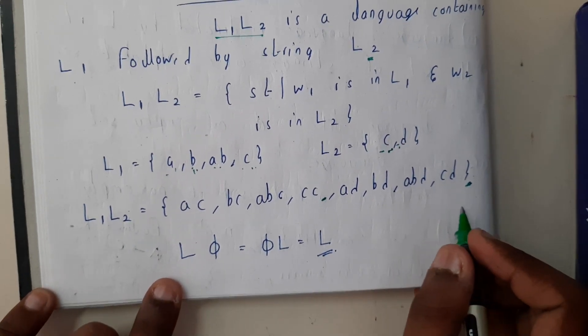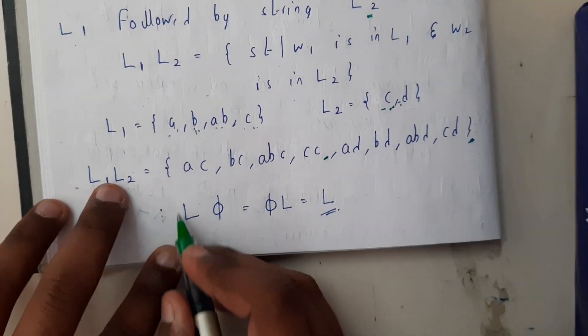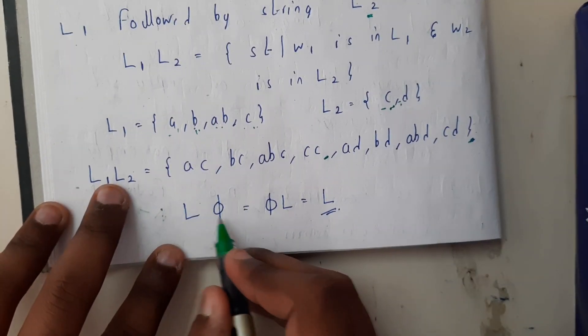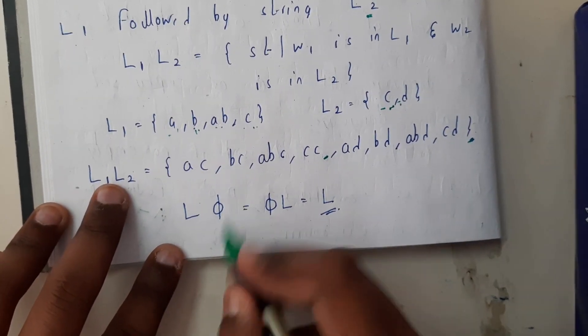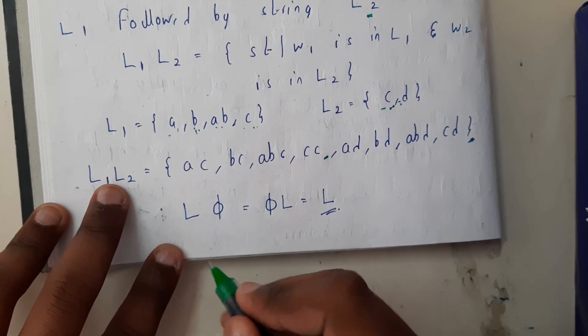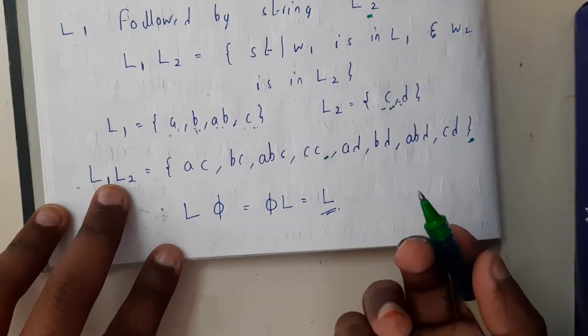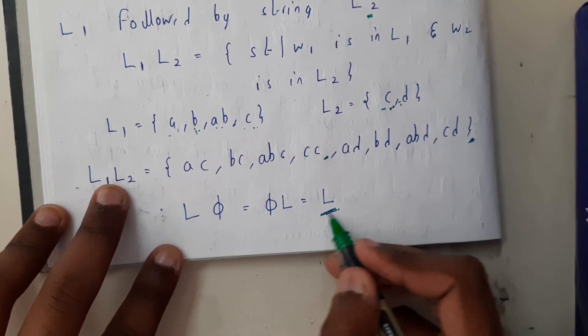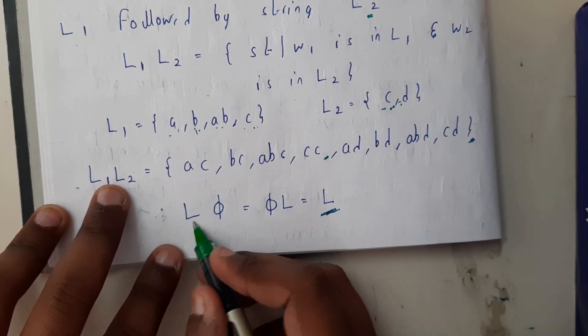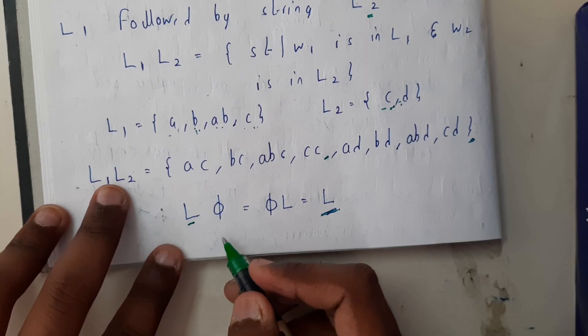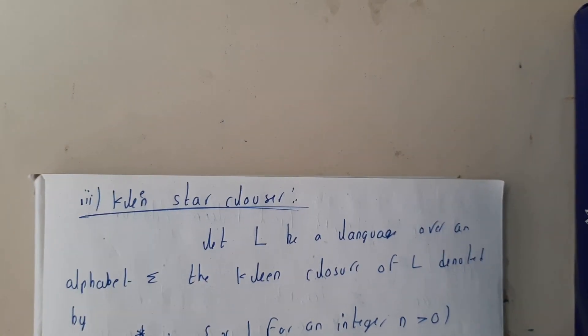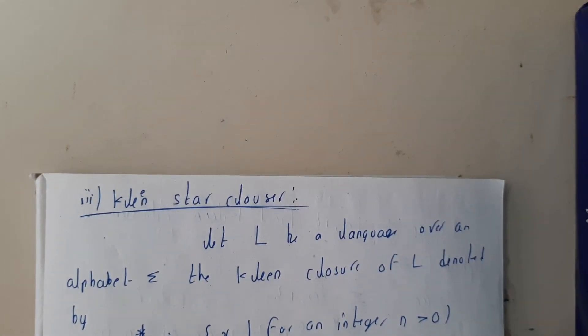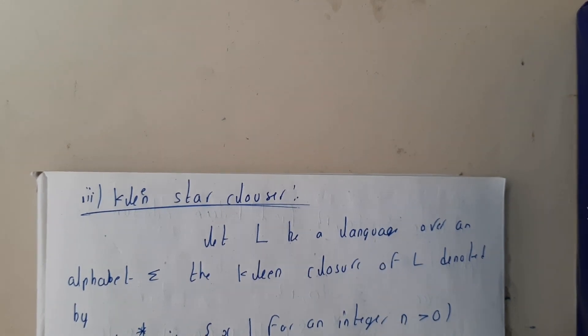So that is how concatenation is done. If you have a doubt about a language concatenated with the empty language, that results in the same language you started with. Now let us continue with the same concepts we have gone through for strings.